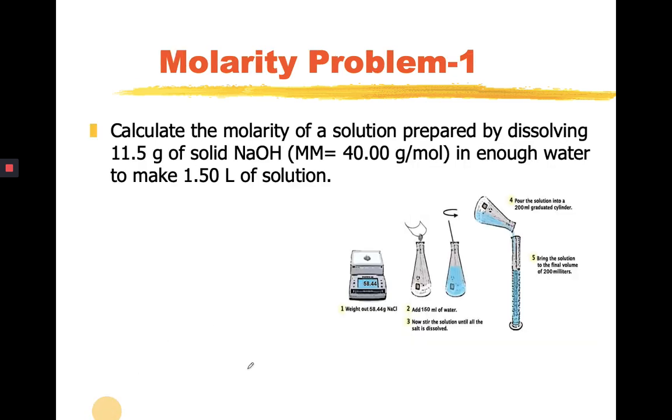Now let's deal with problem number 1. You are asked to calculate the molarity of a solution prepared by dissolving 11.5 grams of solid sodium hydroxide with a molar mass of 40.0 grams per mole in enough water to make 1.50 liters of the solution. So chemicals in the lab are usually prepared this way. They have to weigh out something and then mix it with a little bit of water to dissolve it, and then dilute up to the specific mark.